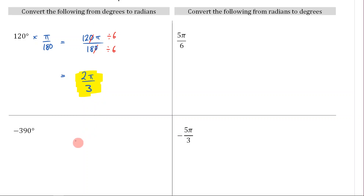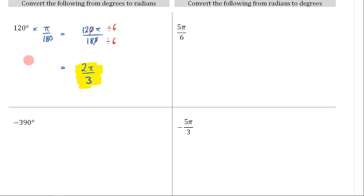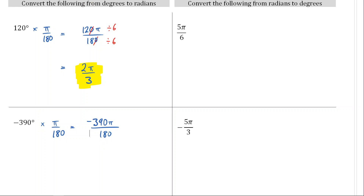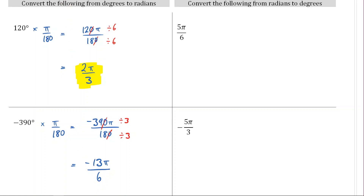For the next example — converting a negative angle from degrees to radians — the negative changes nothing except that our answer will also be negative. We multiply by π/180, giving −390π/180. Cancelling the zeros and dividing top and bottom by 3, we get −13π/18. So the answer is −13π/18.